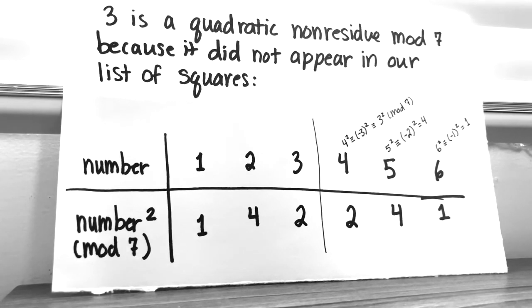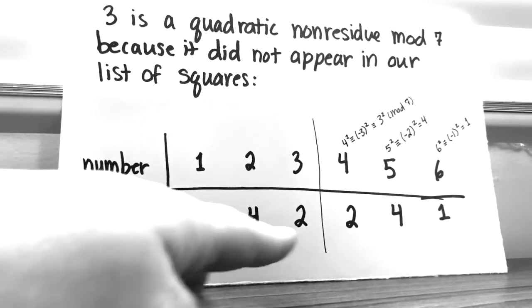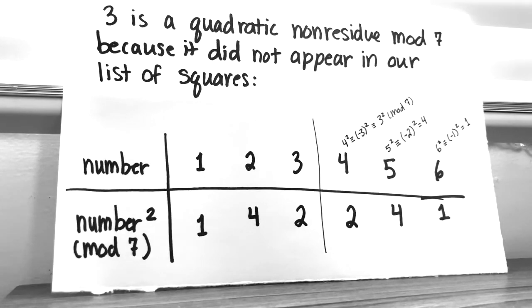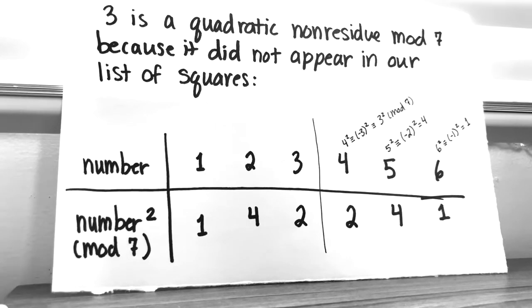I also rewrote the squares here because I do want to point something else out. So here are the numbers I squared, 1, 2, 3, 4, 5, 6. And you can see that 1 squared was 1, 4, 2, 3 squared is 2. But you can see a symmetry, so I drew a line down the middle of this because our squares mod 7 end up being 1, 4, 2, 2, 4, 1.